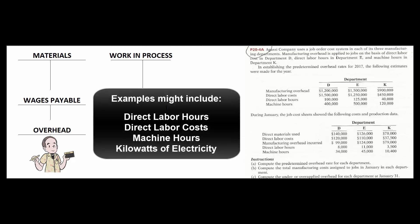If we're in a labor-intensive business but laborers earn different wages and higher-paid workers use more overhead, we'll use direct labor cost. If we're in a highly mechanized business, we might use machine hours as our cost driver.